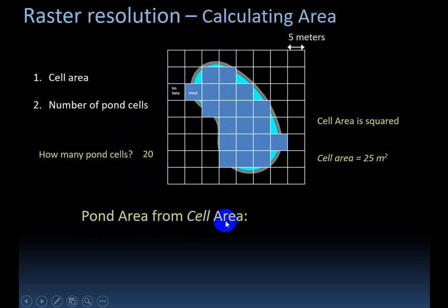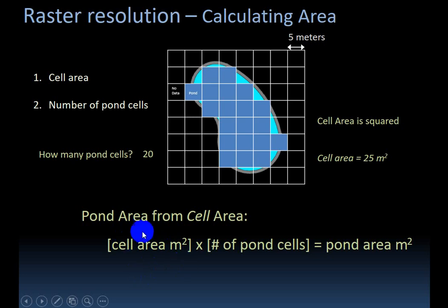So the pond area from cell area is going to equal this equation: the cell area, which we've just calculated from the resolution, multiplied by the number of cells in our pond. So in our case, it's 25 meters squared times 20 cells equals 500 square meters of total cells. Here's where we get the squared units - it's from our area of one cell, and then the number of cells that have that area. That's the total area for our pond.